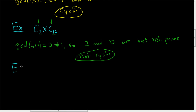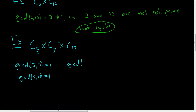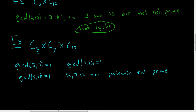Let's look at the cyclic group of order 5, take the direct product with the cyclic group of order 7, and the cyclic group of order 13. The orders are 5, 7, and 13. The GCD of 5 and 7 is 1. Likewise, the GCD of 5 and 13 is 1. And the GCD of 7 and 13 is 1. So the integers 5, 7, and 13 — the orders of the factors — are pairwise relatively prime, so our group is cyclic.